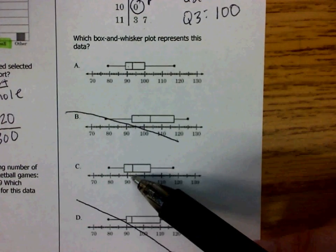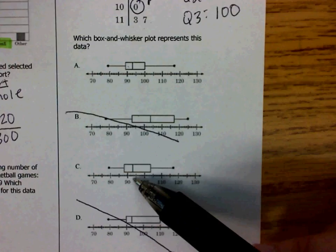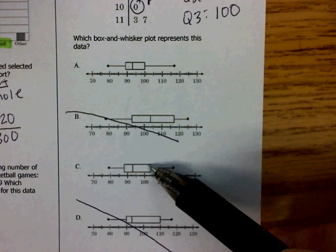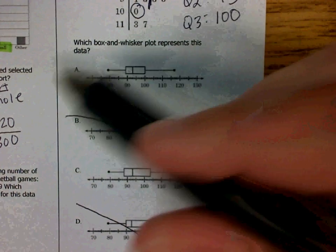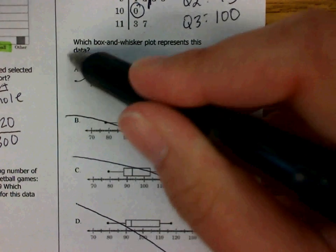In answer choice C, quartile 2 is about 93. Quartile 3 is around 103 or 104. It's not what we were looking for, so the answer is definitely A.